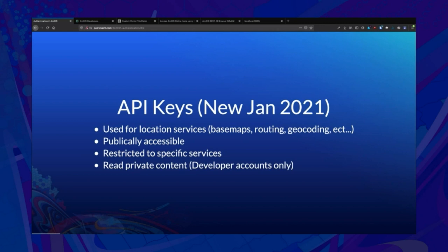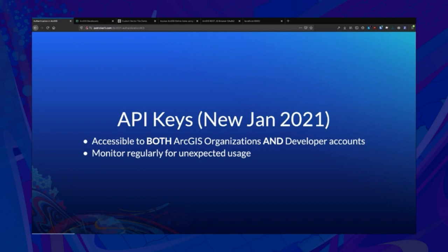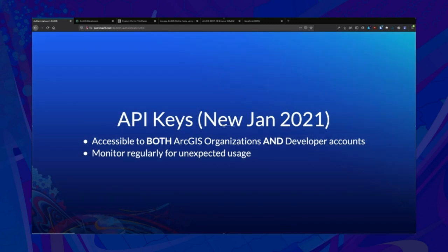If you have a developer account, you can also read private content — you can give your API key access to certain items in your account and it's allowed to read those. This is not available for ArcGIS organizations; we'll get into how you would access private content in an organization a little later when we talk about ArcGIS identities. API keys are available for both ArcGIS developer accounts and ArcGIS organizations, and we want you to use them when possible because you get access to more detailed statistics and tracking. We expect you to regularly monitor them for unexpected usage and rotate them out as needed.